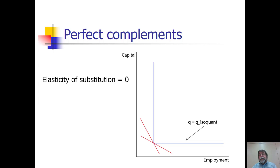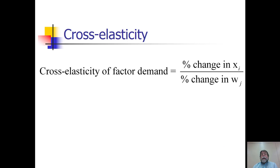Another measure that's used to represent the relationship between two different inputs is the cross-elasticity of factor demand. That's equal to the percent change in the quantity of resource I to the percent change in the price of resource J. So it's a measure of the amount by which a quantity of one input, input I, changes in response to a change in the price of input J.